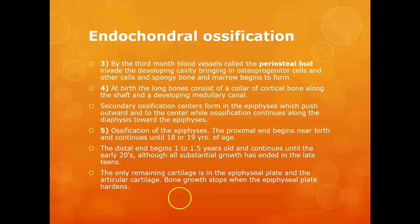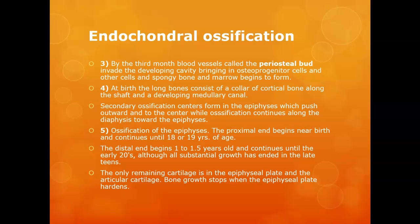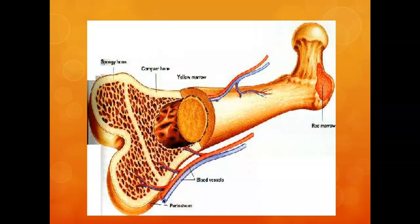What remains of the hyaline cartilage is found at the articular surfaces — the ends of the bones. The only remaining cartilage after ossification is the epiphyseal plate. When that plate ossifies, bone growth has stopped, and you can say it is now an adult bone.